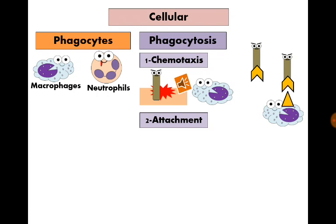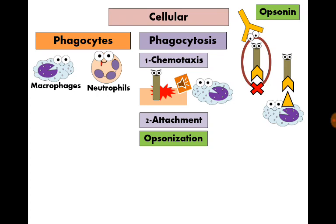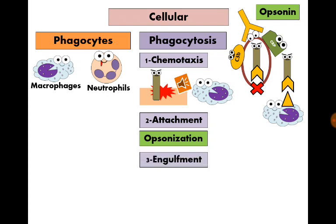The second step is attachment. The macrophage has non-specific receptors that can attach to a great number of microbes. Sometimes organisms evade this attachment by being encapsulated, like pneumococci. In this case, the macrophage is helped by opsonins — factors that attach to the microbe and to the macrophage. Antibodies, complement factor C3b, and C-reactive protein can all act as opsonins, in a process called opsonization.